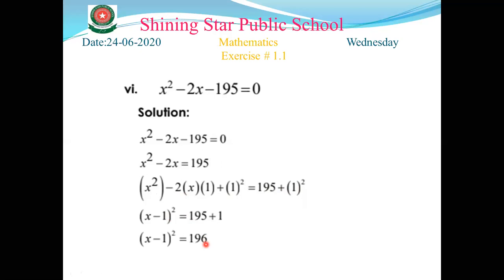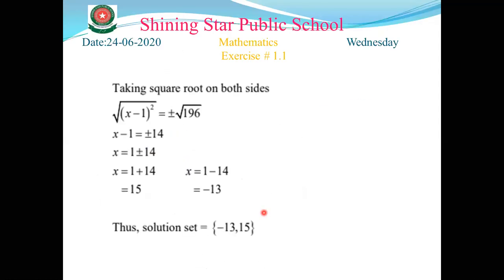The fifth step: take the square root on both sides. The square on the left cancels with the square root, and √196 = 14. So x - 1 = ±14.